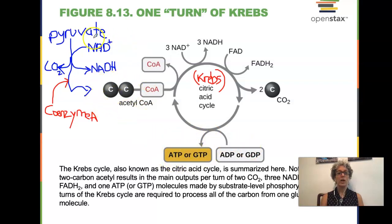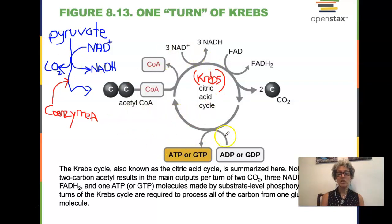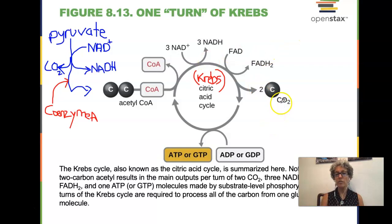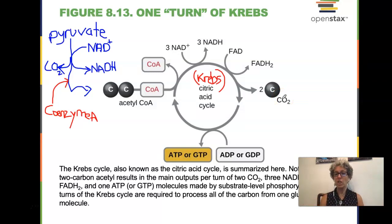We've taken our carbon that was originally glucose. We pulled off some hydrogens and stuck them onto NAD to make NADH in glycolysis. Then, converting pyruvate to acetyl-CoA, we pulled off some more hydrogens to make NADH. When we put that into the Krebs cycle, we pulled off all of the remaining hydrogens so that all we have is carbon and oxygen. That removal of hydrogens is called oxidation.